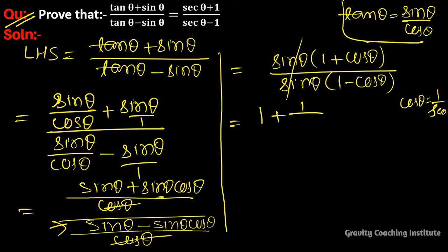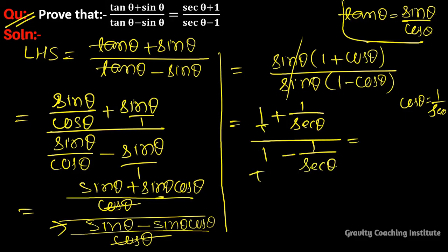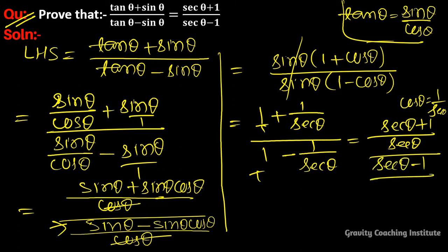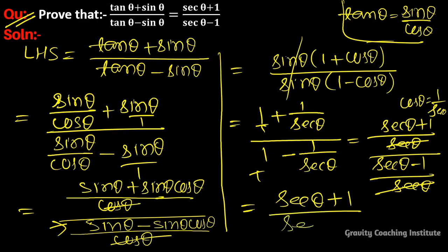Now substituting cos θ = 1/sec θ, this becomes (1 + 1/sec θ)/(1 - 1/sec θ). Taking sec θ as the LCM, this simplifies to (sec θ + 1)/(sec θ - 1), which is equal to RHS. Hence proved.